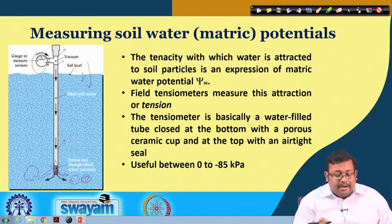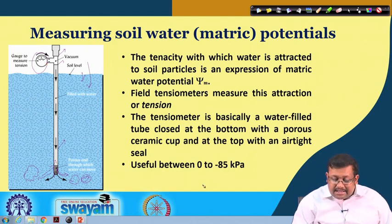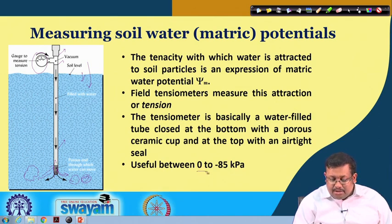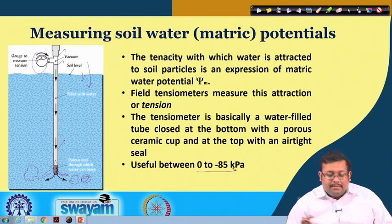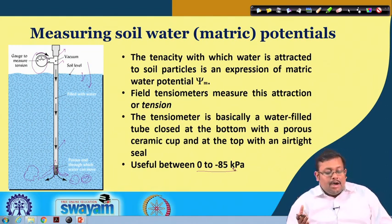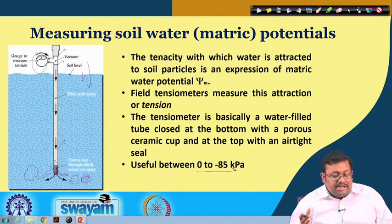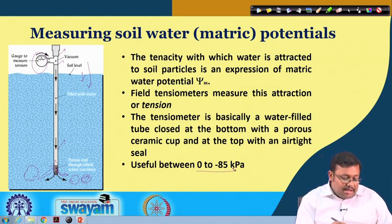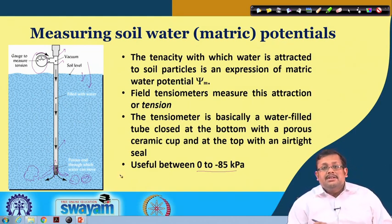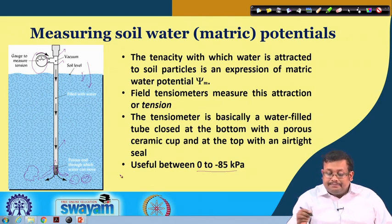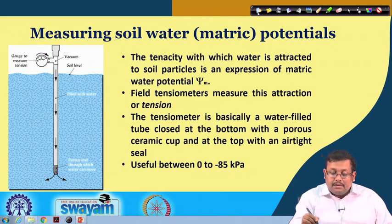The field tensiometer works at a metric potential range between 0 to minus 85 kilopascals. Beyond minus 85 kilopascals these field tensiometers do not work properly.